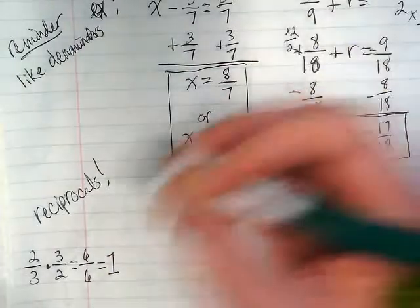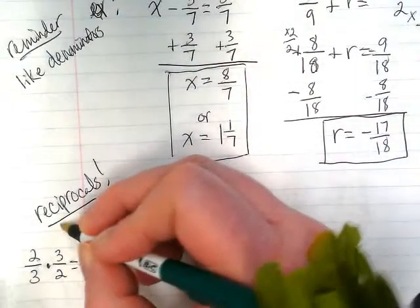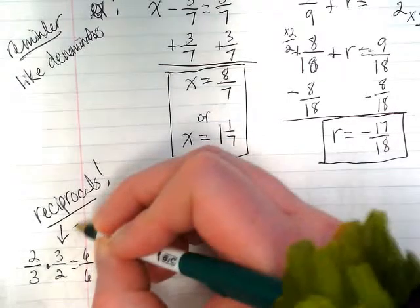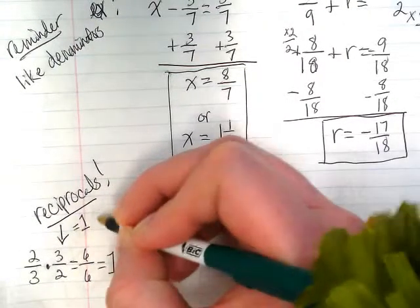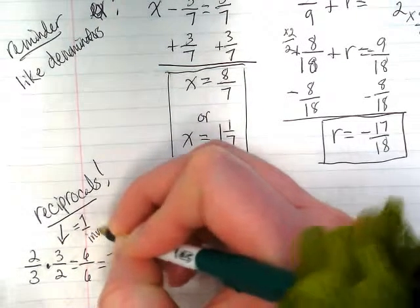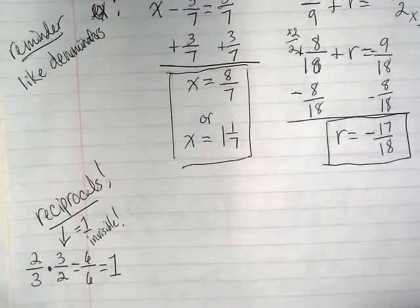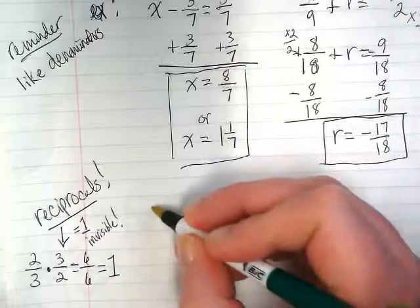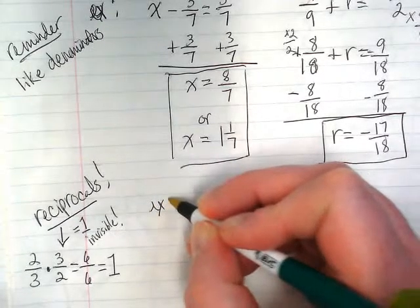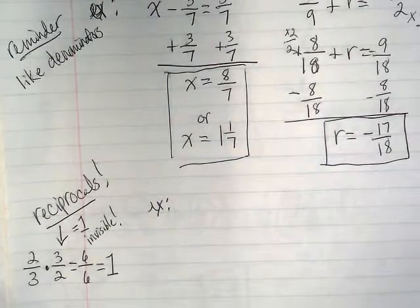And that's important, because we want that reciprocal to help us equal 1, and we can leave that 1 invisible. Because that's going to be going with our variable, and we want what's in front of the variable to be an invisible 1.